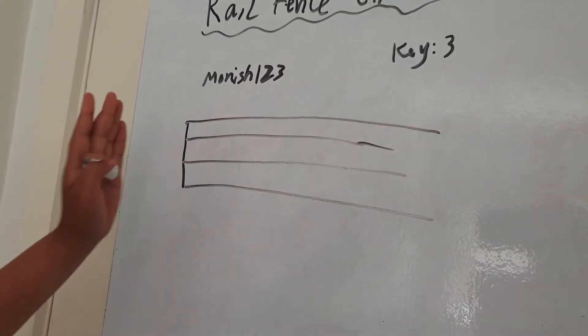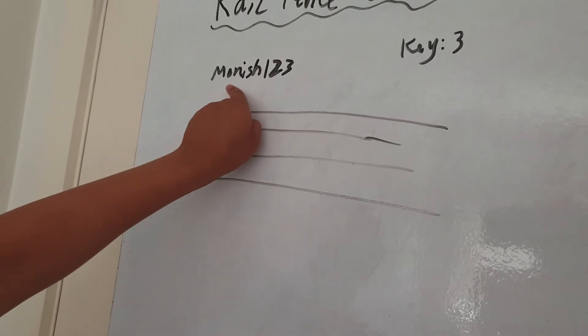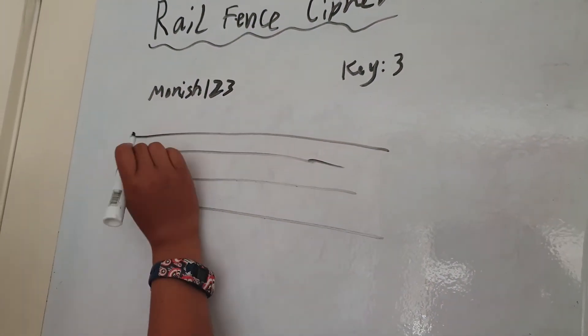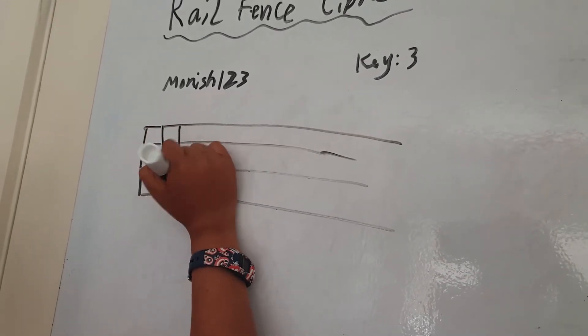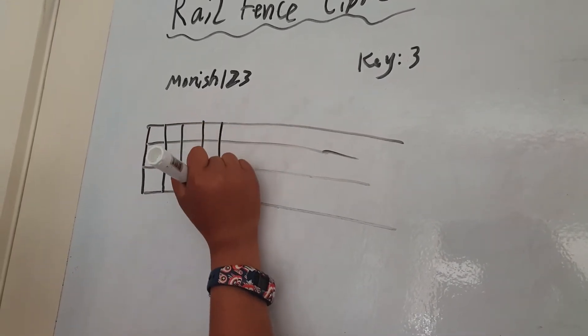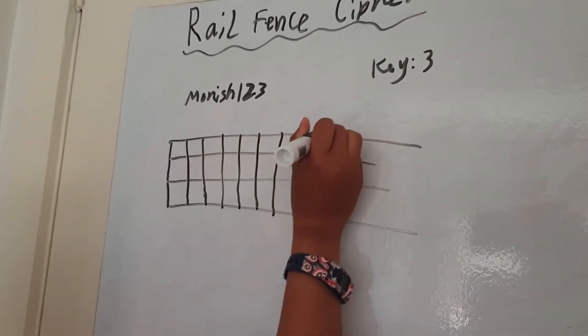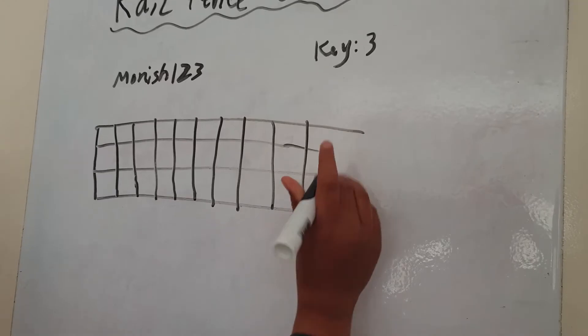And it has to have the same amount of columns as the letters in the message. So there's one, two, three, four, there's nine in there. One, two, three, four, five, six, seven, eight, and nine.